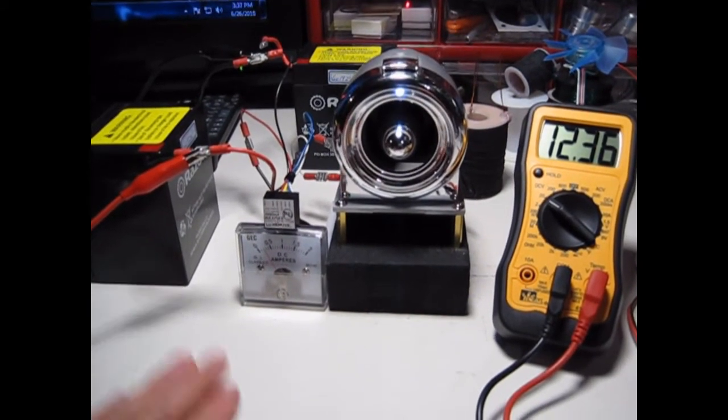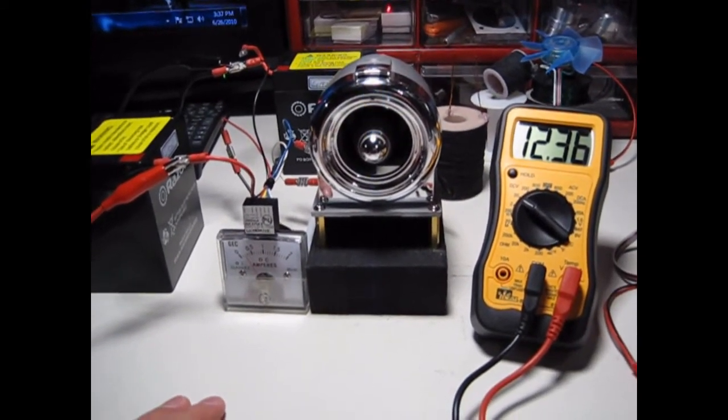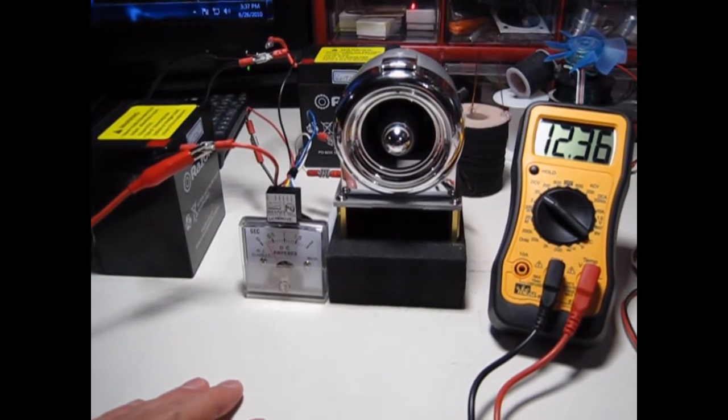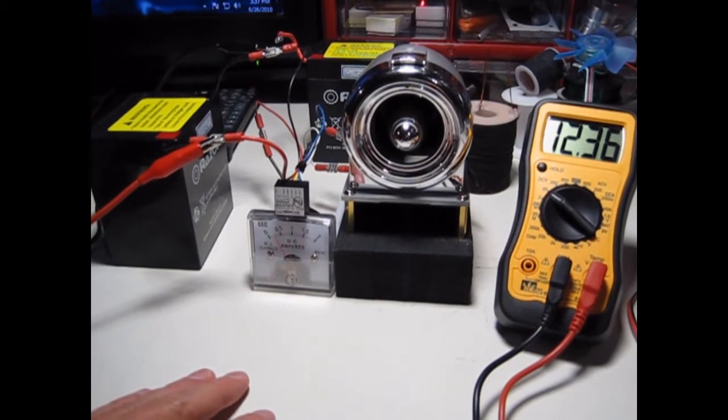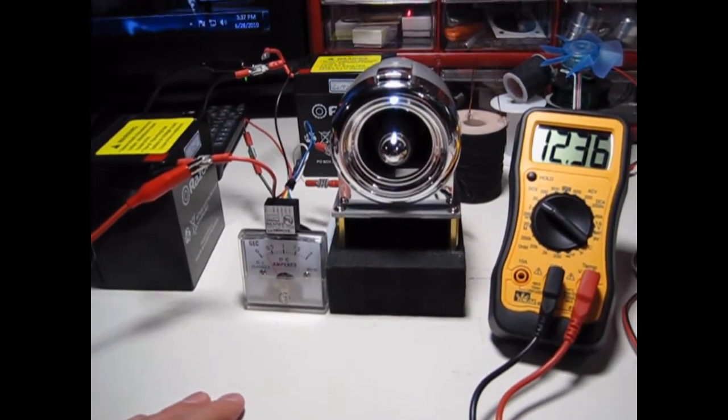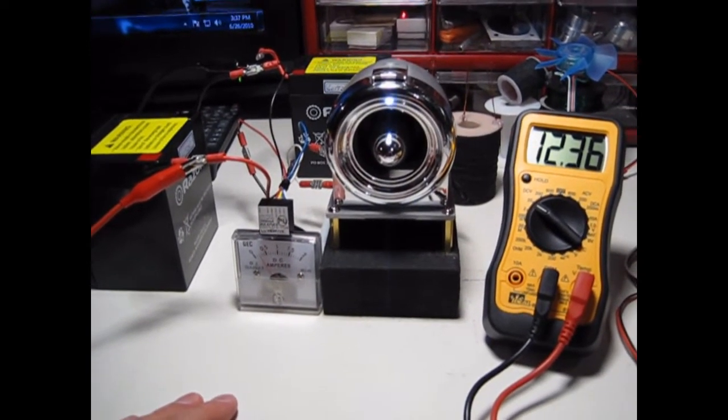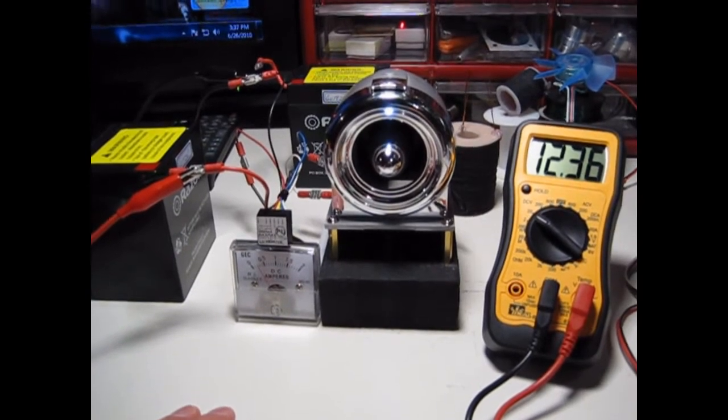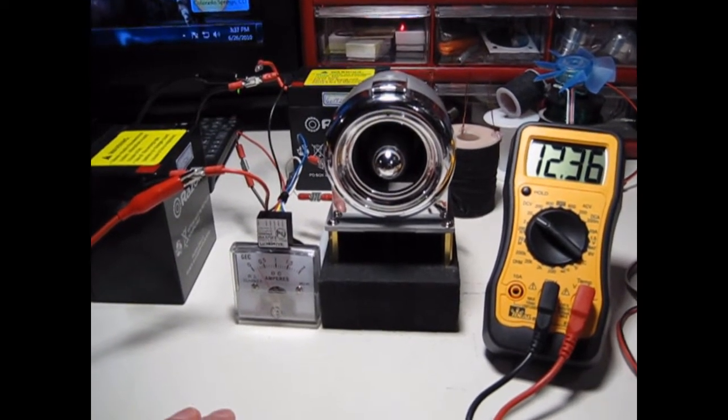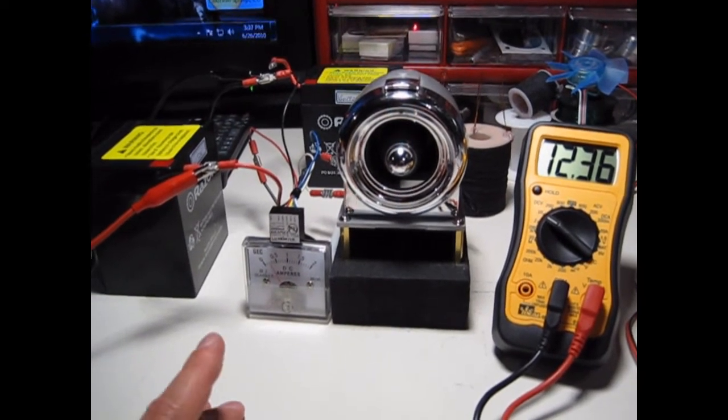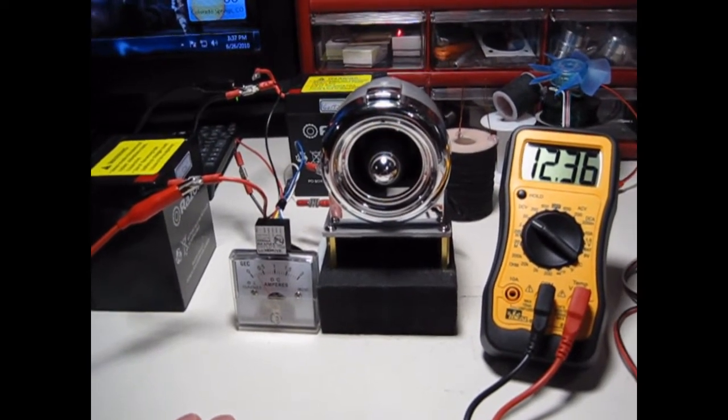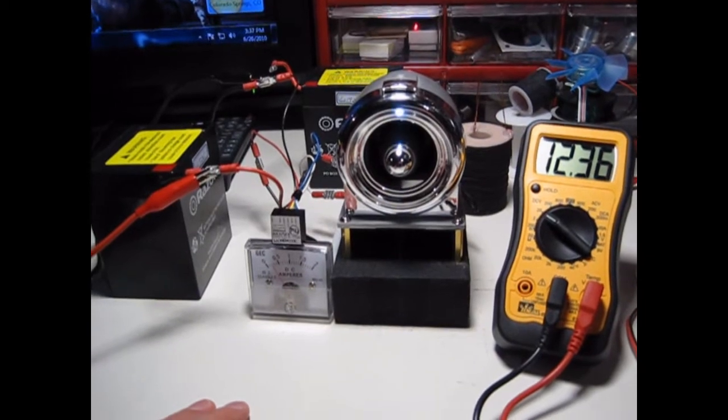And then after it gets down to 12.2 volts, I'm going to let the battery rest for at least two hours, two to five hours. And then I'll start my charge cycle. And I'll be recording this on the Excel file, and I'll show you that at the beginning of the video. And I'm going to start filling it in and do my 20 cycles. And I think I've got a good setup here.